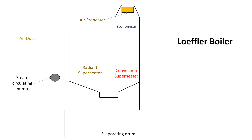Hello everyone, today we will discuss about the low floor boiler. Basically this is a water tube boiler and it is using a forced circulation. Its main principle of working is to evaporate the feed water by means of superheated steam from superheater.